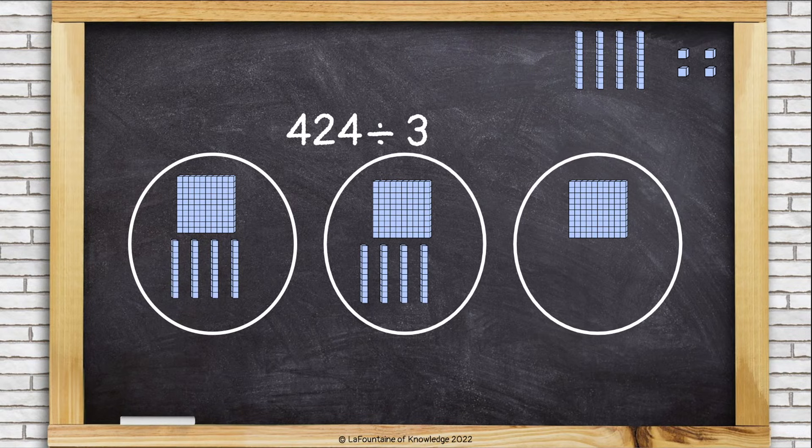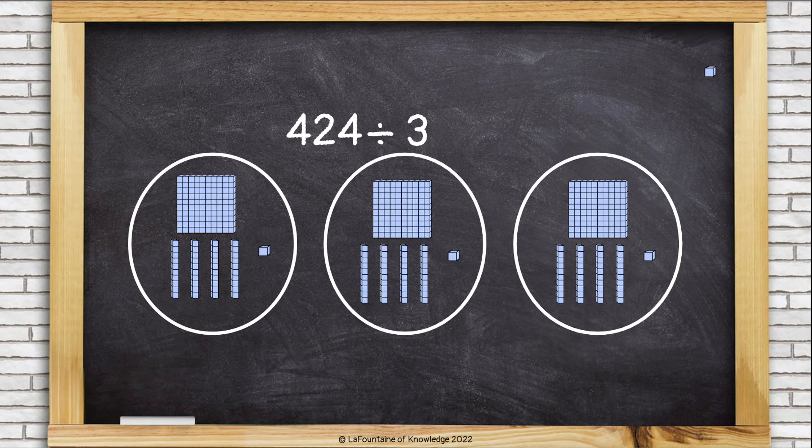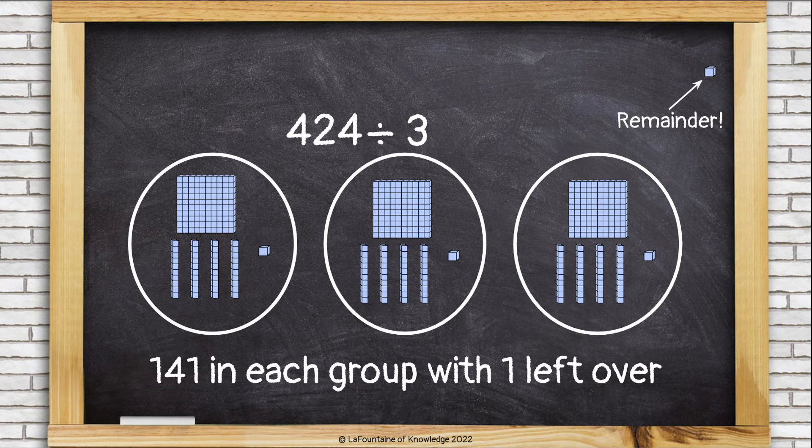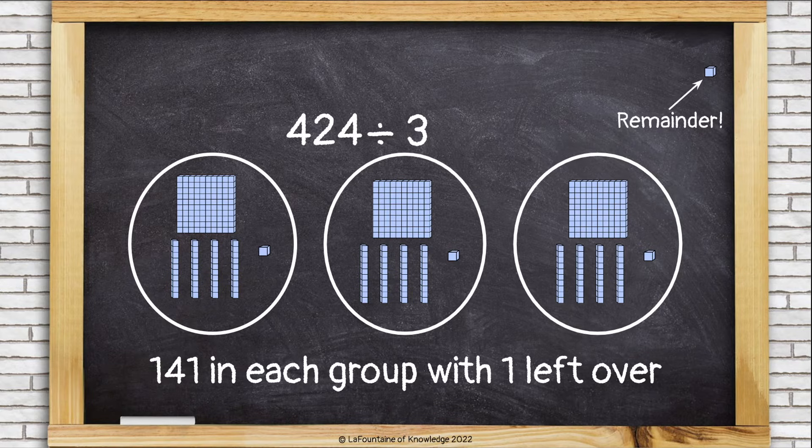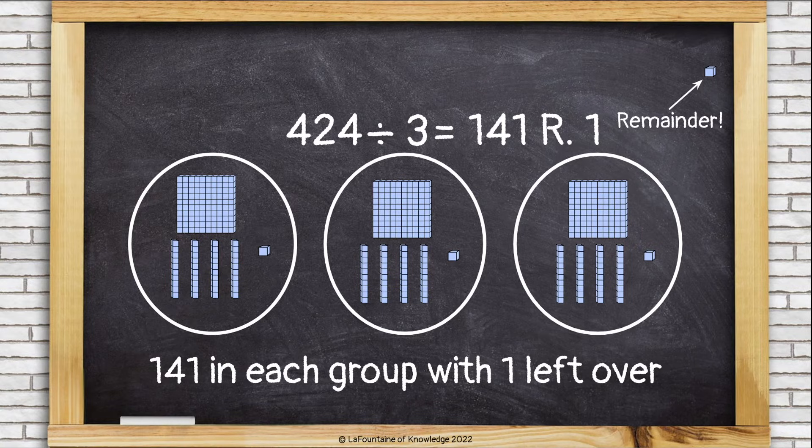Now let's divide up our tens. I'm going to give each group four tens. And that used up all my tens evenly. And now I have four ones, so I can give each group a one. And I have a one left over. That's going to be my remainder. So I have 141 in each group with one left over. So the answer is 141, remainder one.